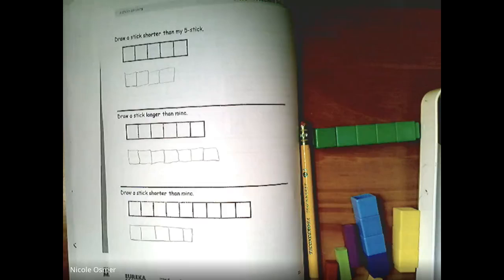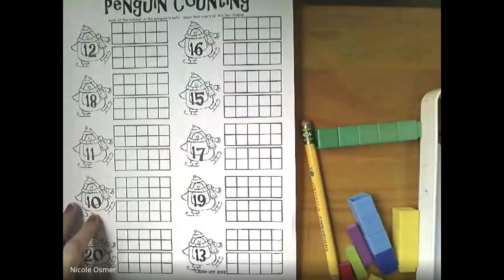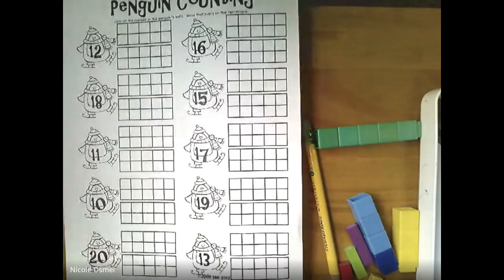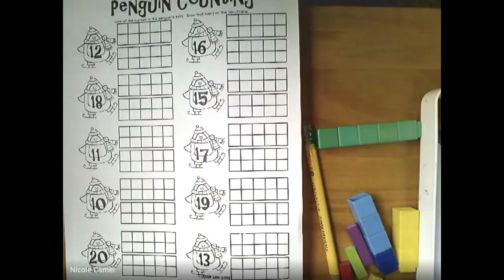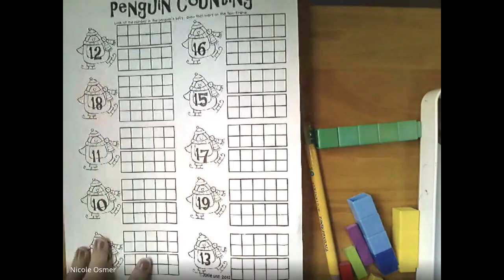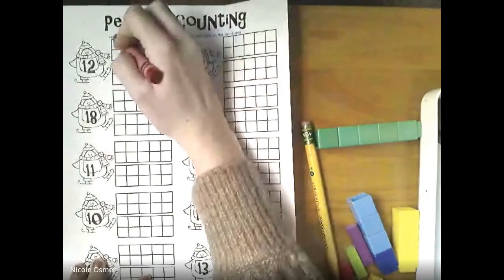Alright, boys and girls. Our second activity for today is... Here it is. Penguin counting. Look at the number in the penguin's belly and show that many on the 10 frame. So these are some big high numbers. We're going to work through this together live at 12 o'clock. But you can get a head start if you want and start with 12.